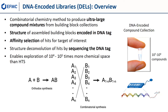The method enables with ease the synthesis of 10 million to a billion compounds. Identifying hits by affinity selection and structural deconvolution is achieved by sequencing the DNA tag. The exploration of significantly more chemical space than high-throughput screening is therefore possible.